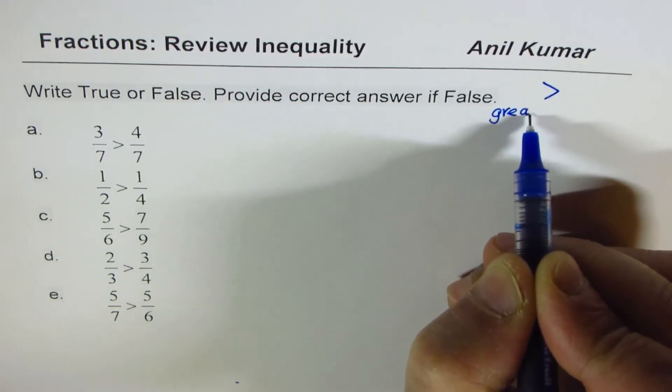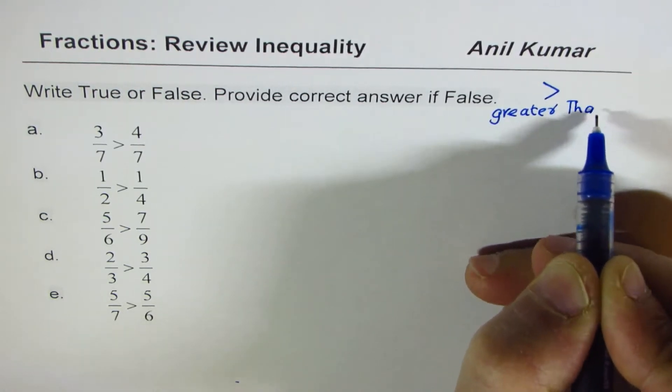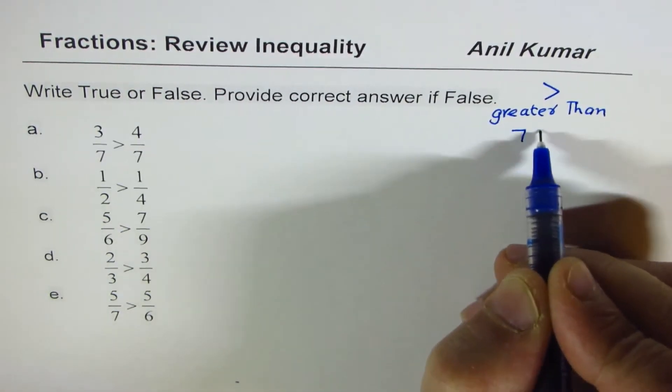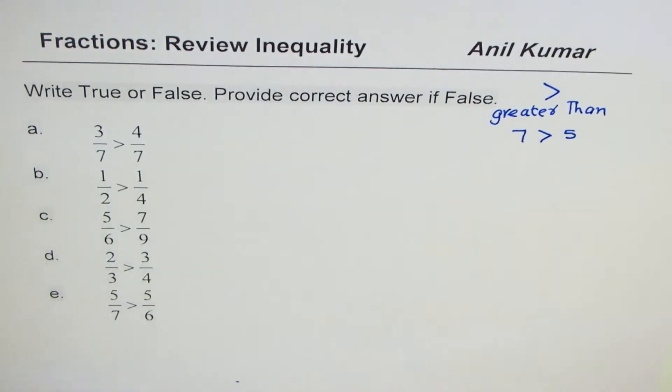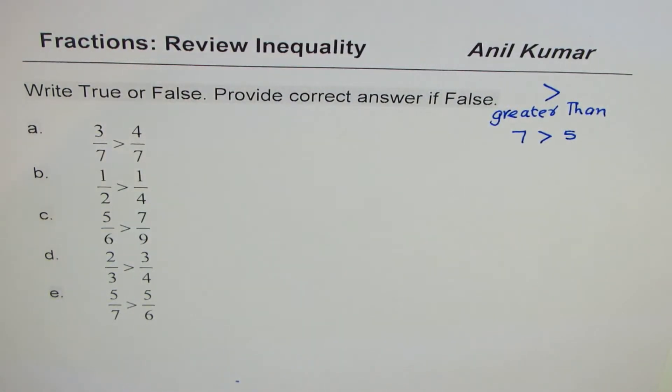As you know, 7 is greater than 5. That is what we mean by this symbol.